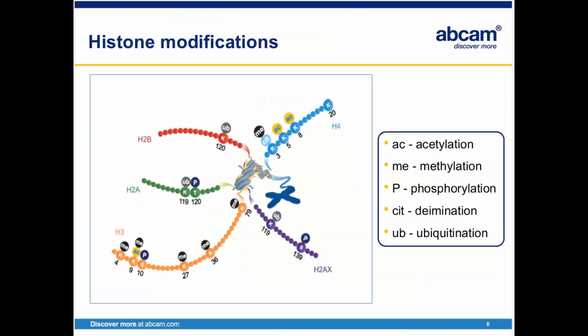N and C terminal tails of histones extend from the nucleosome core, and various chemical groups can modify their amino acids. Histones are characterized by a large number of post-translational modifications, which serve to allocate the genome into active and inactive regions. At least nine types of histone modifications have been described, each catalyzed by a specific set of enzymes. The best understood modifications are lysine acetylation, lysine and arginine methylation, serine, threonine, and tyrosine phosphorylation, and serine and threonine ubiquitination. Other modifications include citrullination, crotonylation, and proline isomerization. In the next two slides, I will discuss the two most widely studied modifications in more detail.